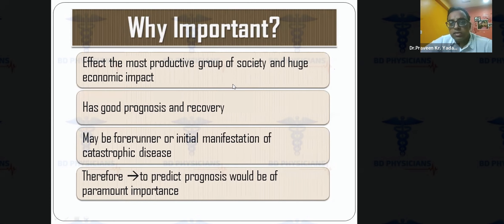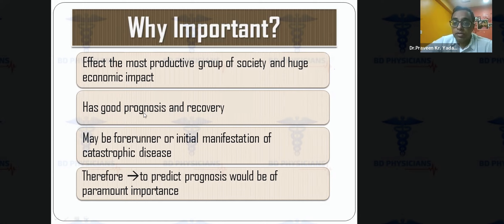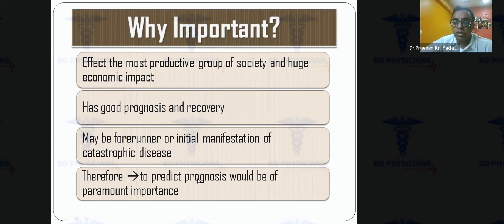The 15-to-45 age group represents the most productive segment of society, so stroke in this group has enormous economic consequences for families and nations. The prognosis is relatively good because these patients have fewer comorbidities and better neuroplasticity. However, young stroke may be the first manifestation of a severe underlying disorder, making accurate diagnosis critical for prognosis and appropriate treatment.